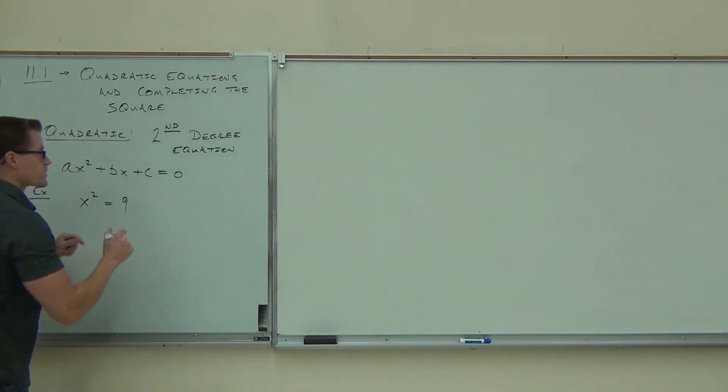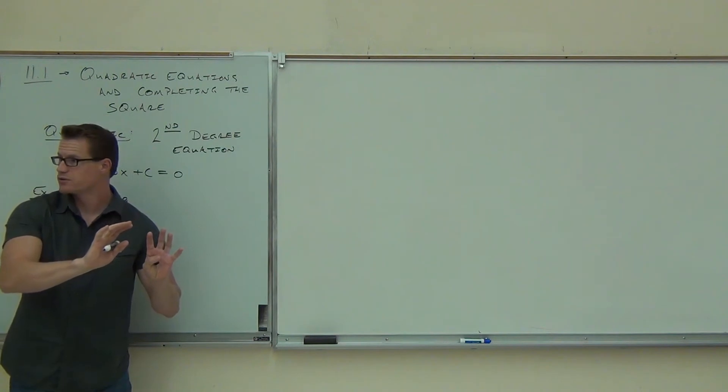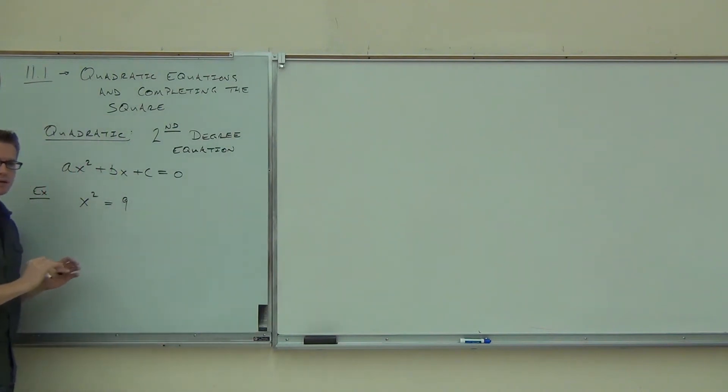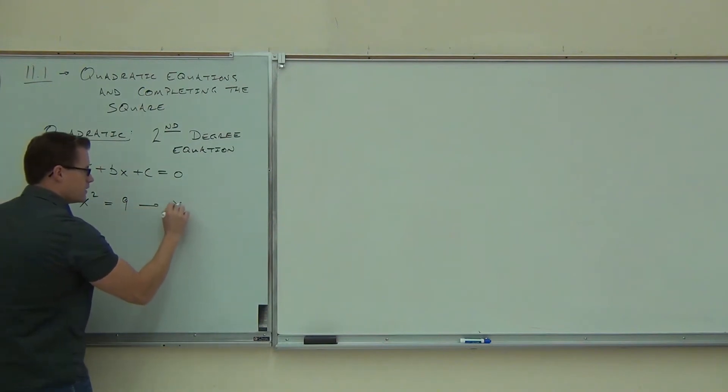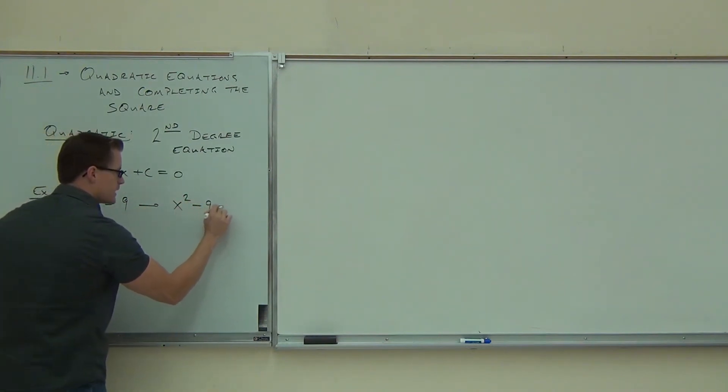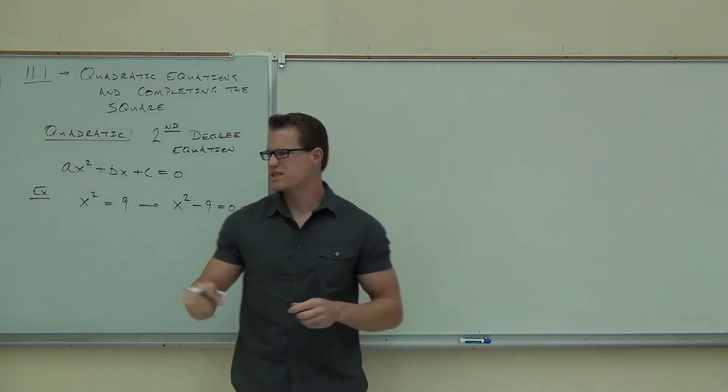The old way you'd solve this is realize, oh, this is an x squared. I can get everything to one side and zero to another side and then factor. True? How do we get everything to one side here? Minus 9. Okay. So, I'd subtract 9 and this would become x squared minus 9 equals 0. True? What's that?